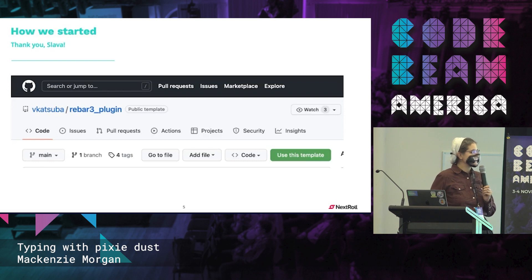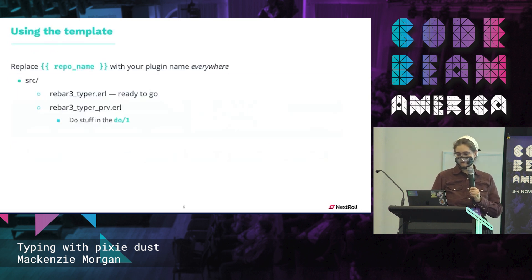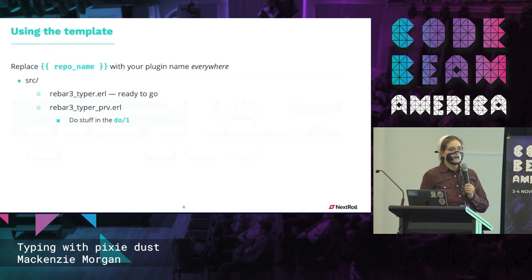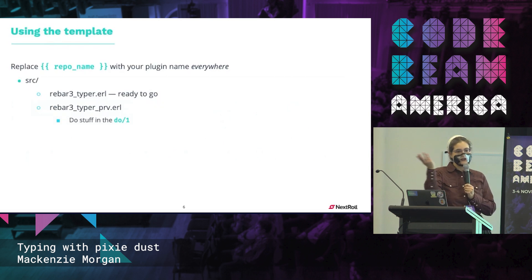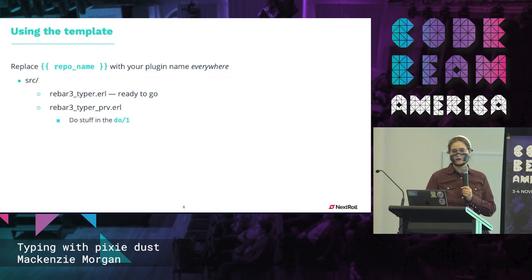Using the template mode is different from forking in that it doesn't show up as a fork in GitHub and it doesn't have all the repo history. When you use this template to create your own rebar plugin, it's pretty straightforward — you do a search and replace everywhere it says repo name.